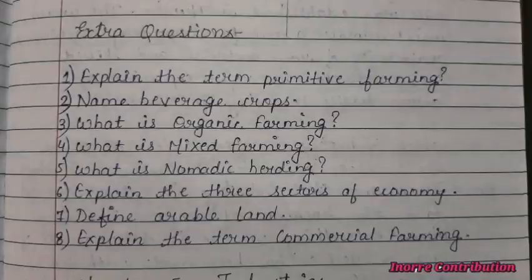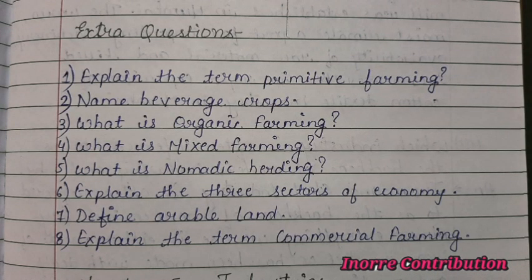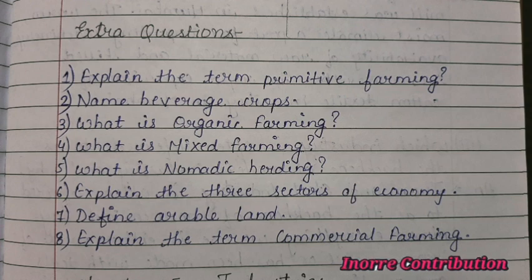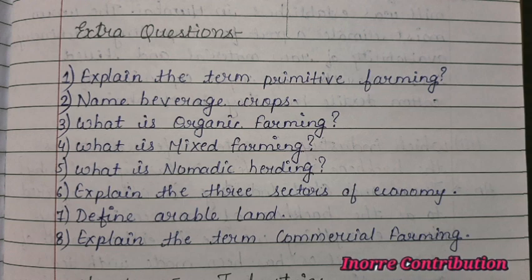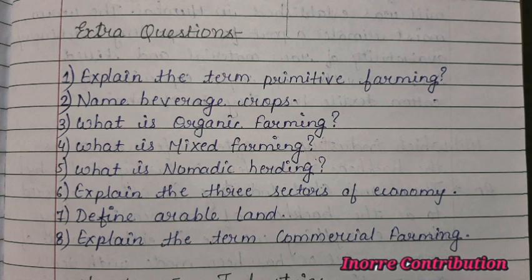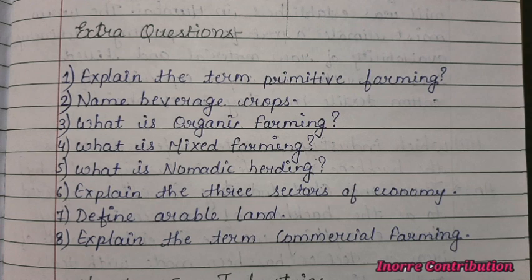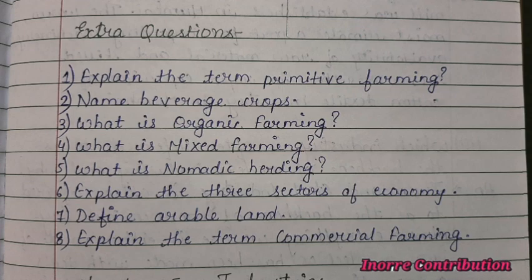Extra questions for practice: first, explain the term primitive farming; second, name beverage crops; third, what is organic farming; fourth, what is mixed farming; fifth, what is nomadic holding; sixth, explain the three sectors of economy; seventh, define arable land; eighth, explain the term commercial farming.